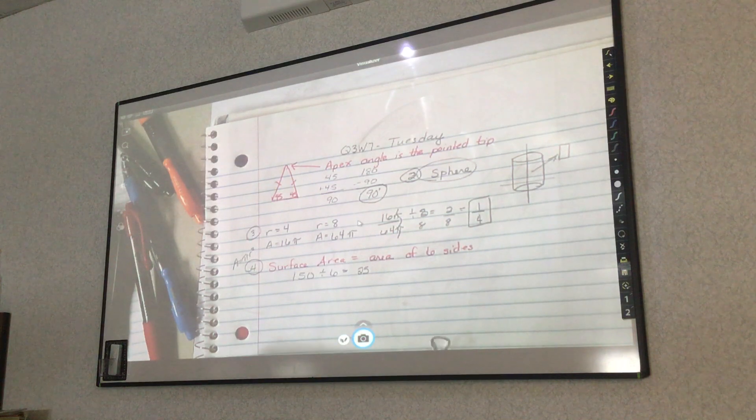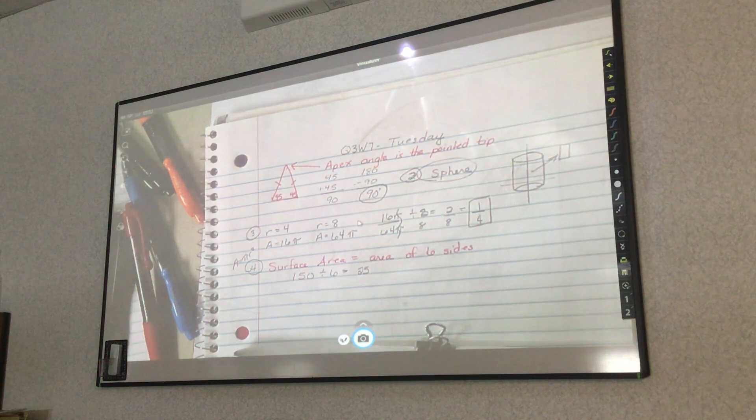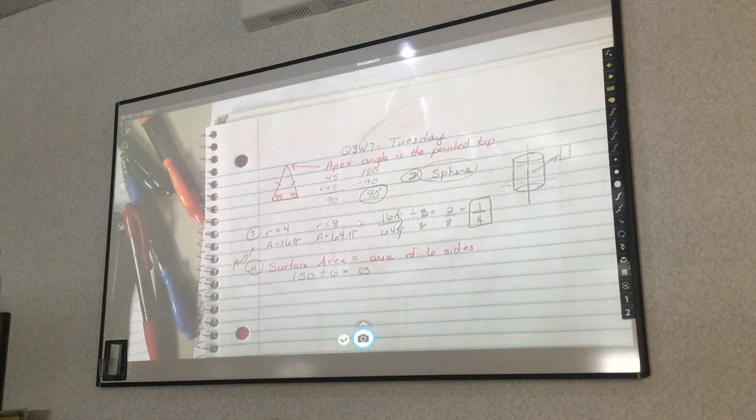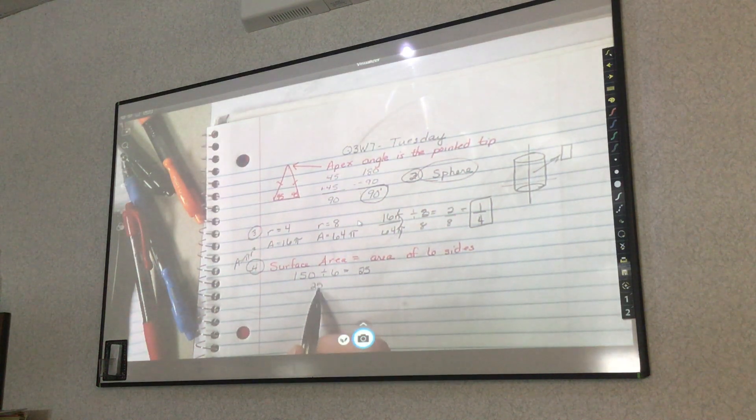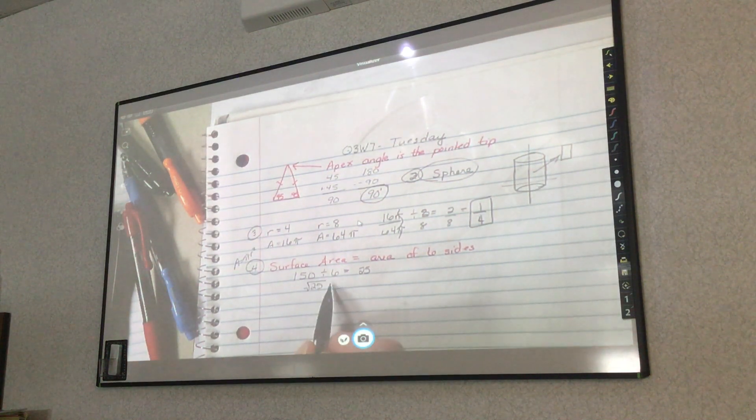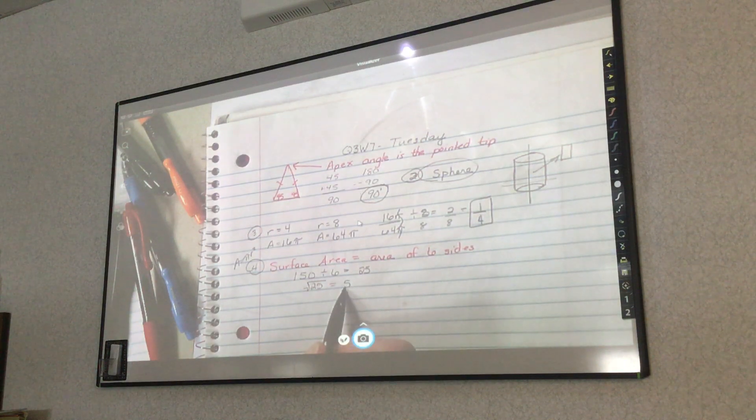But this is a cube, right? So all sides need to be the same length. So I need to find, if the area of one side is 25, I find the square root, which is 5, because 5 times 5 is 25.